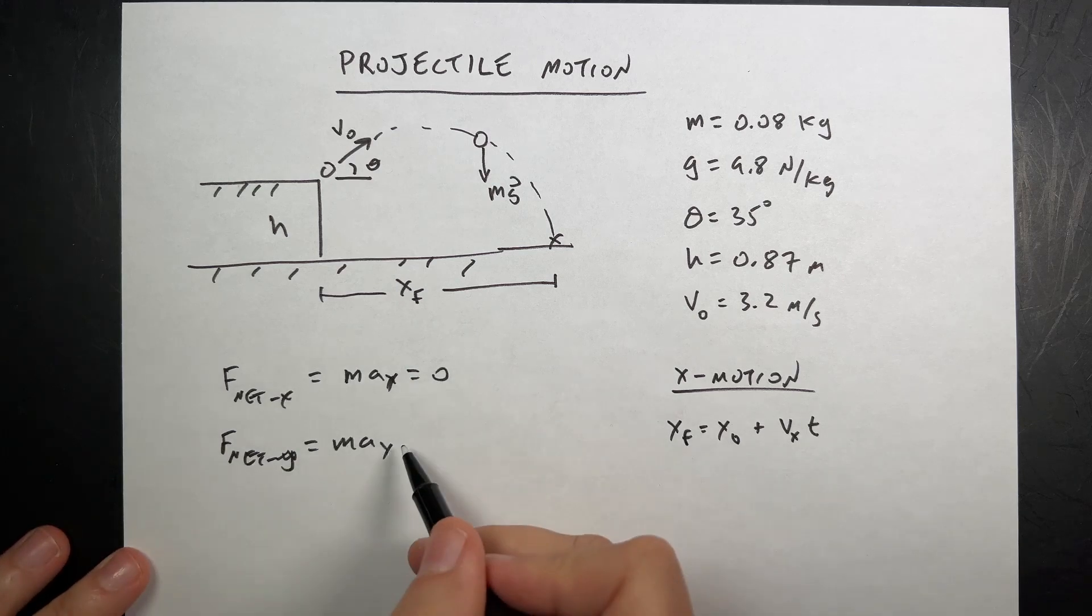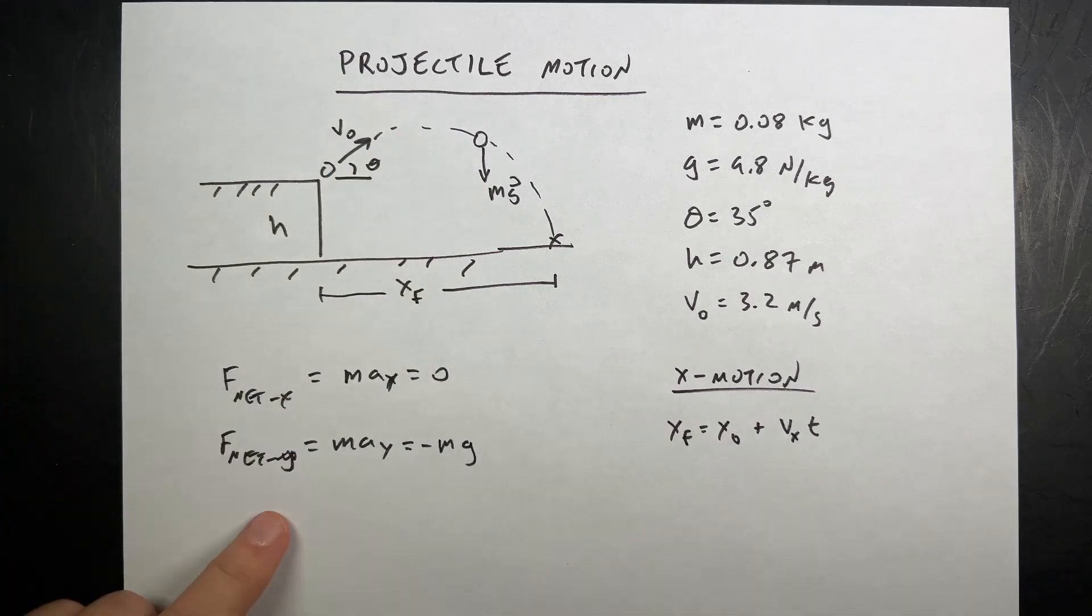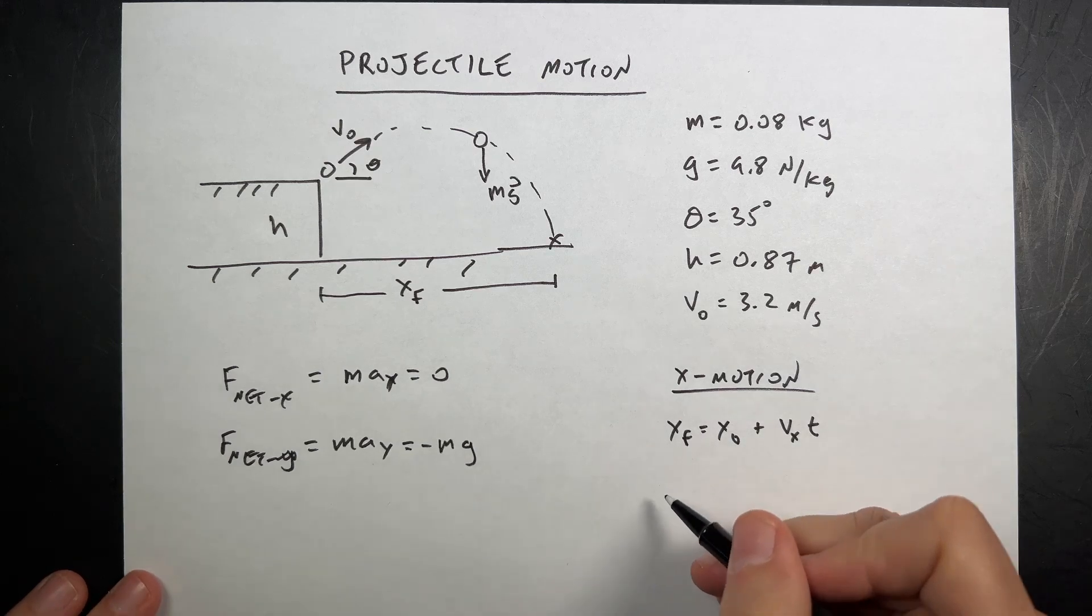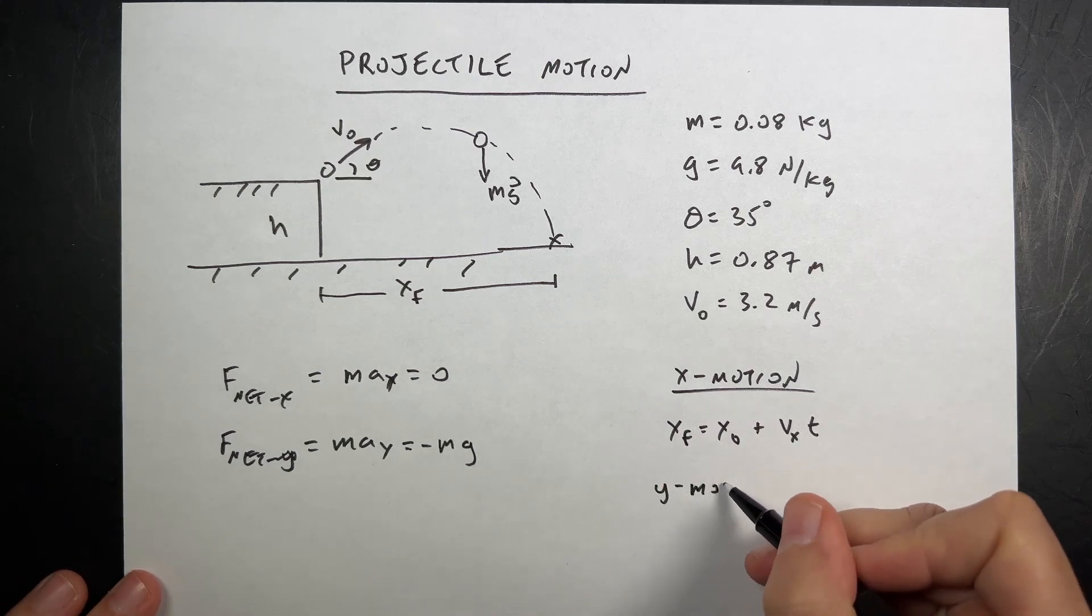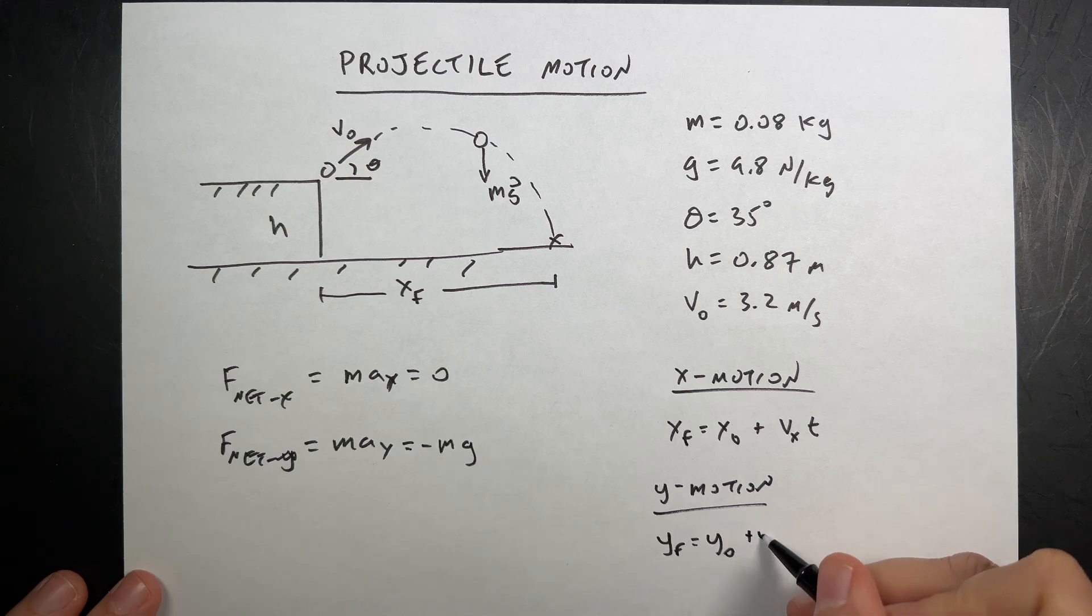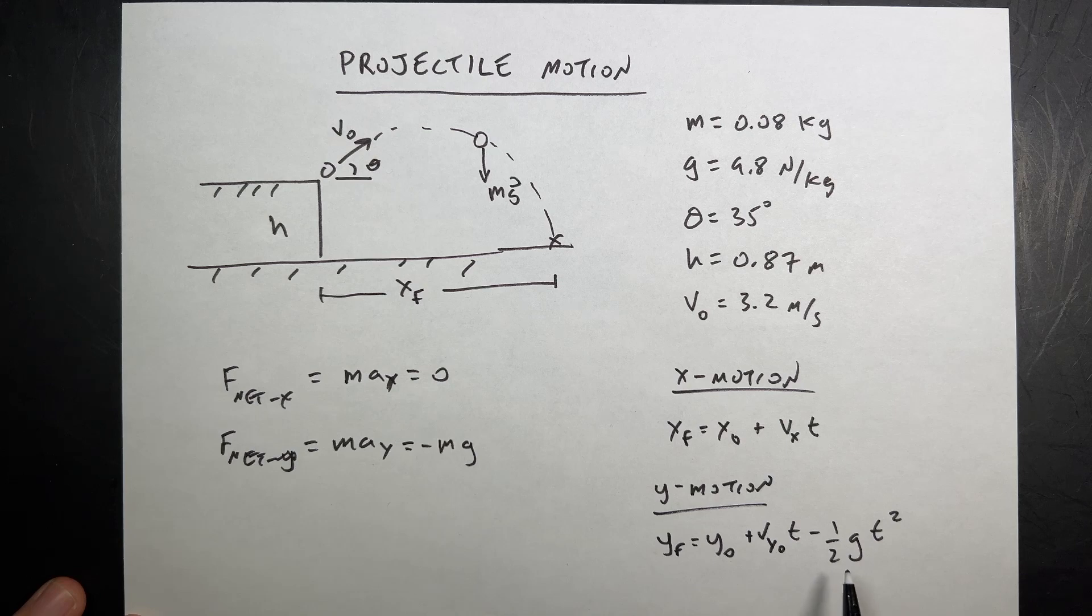Now in the y direction, the force is equal to negative mg, right? Because it's down and this is a component, so it's negative mg. And if I, again, the mass cancels, right? So I get the acceleration in the y direction is negative g. And that gives me the following equation. In the y motion, I know that the y final is equal to y initial plus vy initial t minus one-half g t squared. It's plus one-half a t squared, but a is negative g. So we get that.